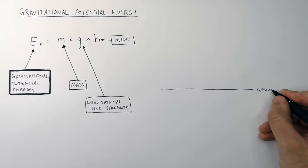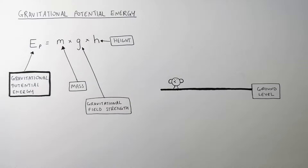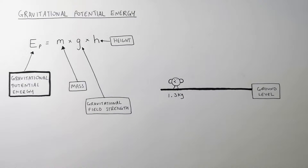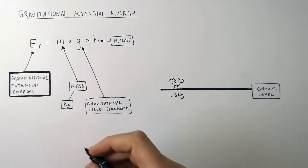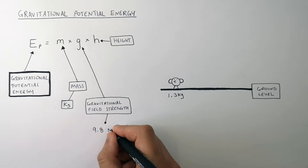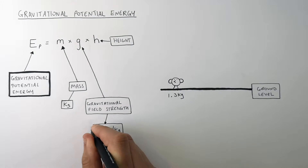We're going to go through this worked example. The bird is stood on the ground, and we need to work out the gravitational potential energy the bird has. This 1.3kg bird is stood on Earth, so the mass of the bird is 1.3kg — mass is always in kilograms. The gravitational field strength acting on the bird is 9.8N per kilogram, because that's the gravitational field strength on Earth.